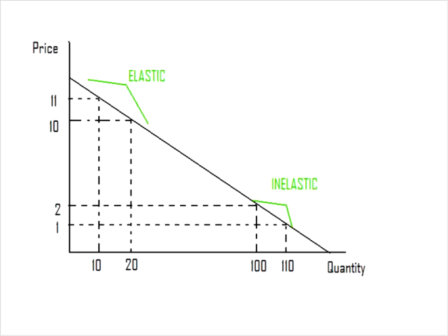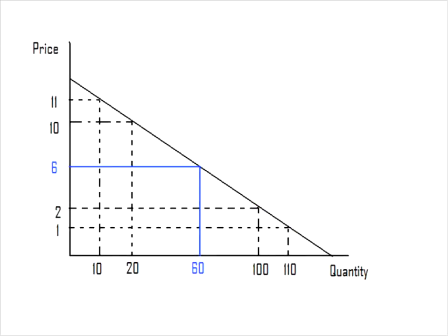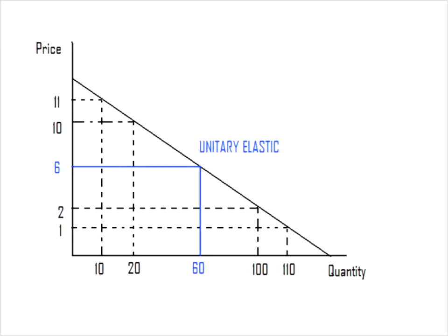From these calculations, we can see that at higher prices, the straight-line demand curve is more elastic, and at lower prices, the curve is more inelastic. Firms operating at the bottom end of the demand curve can increase revenue by raising their price and moving up the curve. On the other hand, firms at the top end can increase revenue by lowering their price and moving down the curve. Eventually, we converge on the dead center of the curve — the halfway point — which is the unitary elastic point where revenue is maximized. At this point, revenue equals 360, higher than any revenue number we've seen so far.